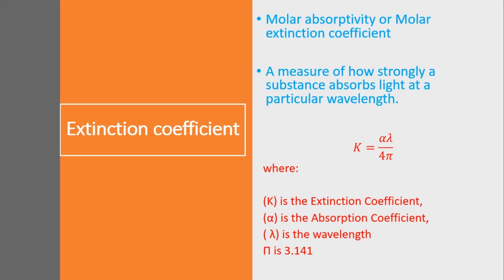To measure the extinction coefficient, we have the equation: k is equal to alpha multiplied by lambda, divided by 4 pi. Here, k is our extinction coefficient (or molar coefficient), alpha is the absorption coefficient, lambda is the wavelength, and the value of pi is 3.141.